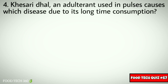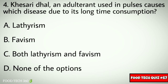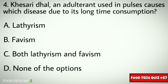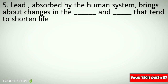Question number four: kesari dal, an adulterant used in pulses, causes which disease due to its long-term consumption? Options: A) lathyrism, B) favism, C) both lathyrism and favism, D) none of the options. Correct answer: A) lathyrism.